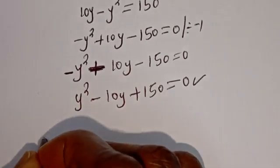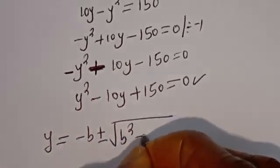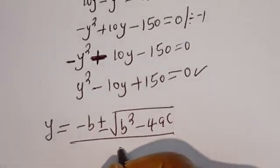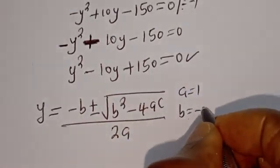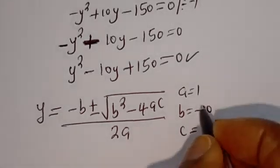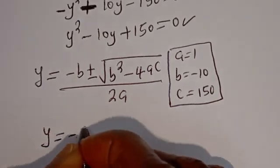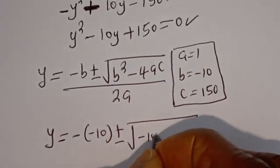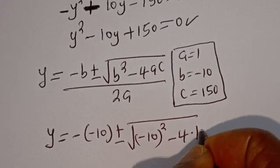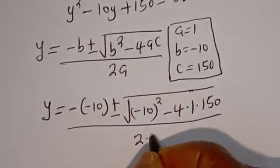This is a quadratic equation which can be solved with the quadratic general formula. From the quadratic general formula, Y is equal to minus B plus or minus square root of B squared minus 4AC, divided by 2A. From this equation, A is equal to 1, B is equal to minus 10, and C is equal to 150.